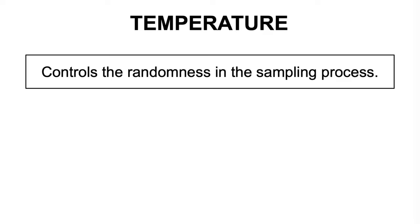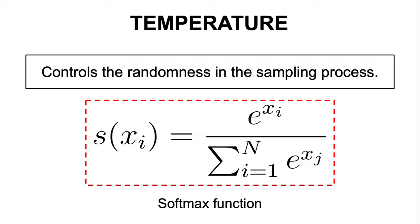The first technique usually employed in random sampling that we'll explore in this video is the temperature parameter. The temperature controls the randomness of the sampling process by influencing the softmax function output, which takes a vector of arbitrary real value scores and converts them into probabilities that sum to 1.